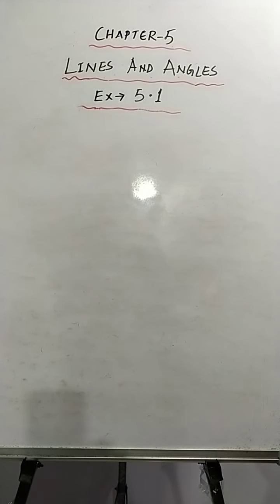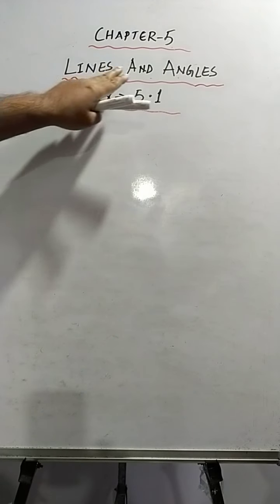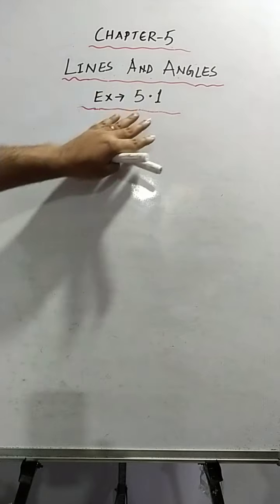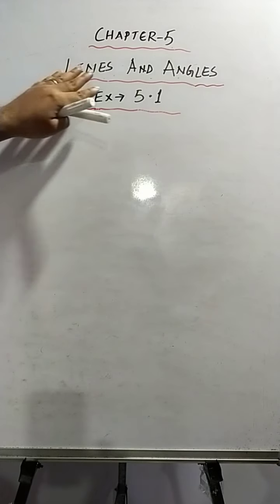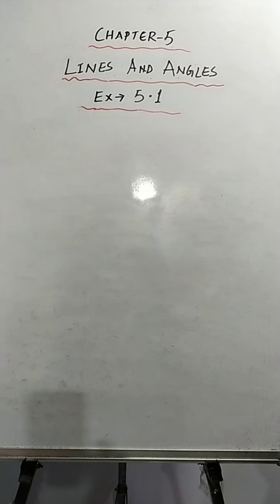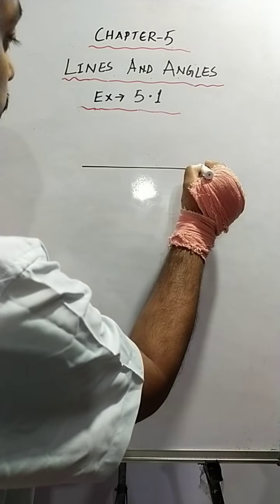Hello students. Today we'll start a new chapter, that is Chapter 5: Lines and Angles. So before we start with Exercise 5.1, I need to say something on Lines and Angles. So what is a line? As you have studied in your junior class, a line has neither a starting nor an end point. This is what we have learned, and this is how we represent the line.